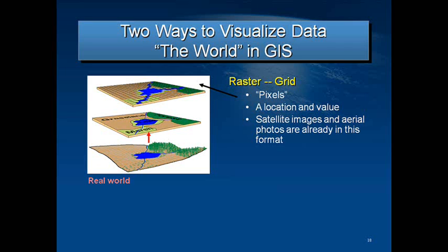There are two ways that layers in a GIS can be visualized on a map. One is the vector layer and the other is the raster layer.